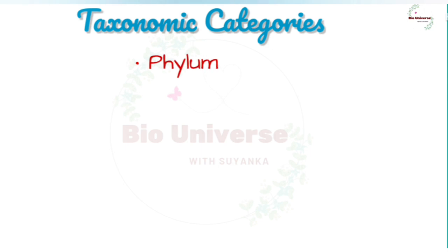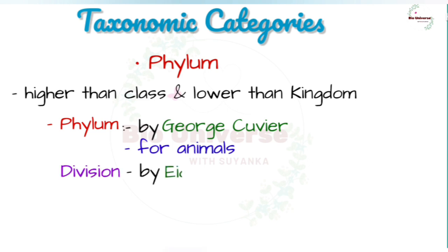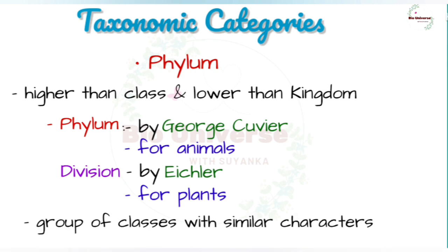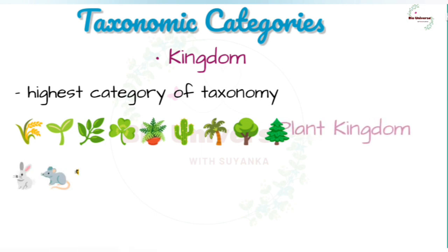Phylum is a taxonomic category higher than class and lower in rank to kingdom. The term phylum, coined by Georges Cuvier, is used for animals, while the term division, coined by Eichler, is used for plants. A phylum or division consists of one to several related classes having a few similar characters. Based on the common features like the presence of notochord and dorsal hollow neural system, fishes, amphibians, reptiles, and birds are included in the phylum Chordata. Kingdom is the highest category in taxonomy where all organisms share a set of distinguishing characters — for example, all plants in the plant kingdom or all animals in the animal kingdom.